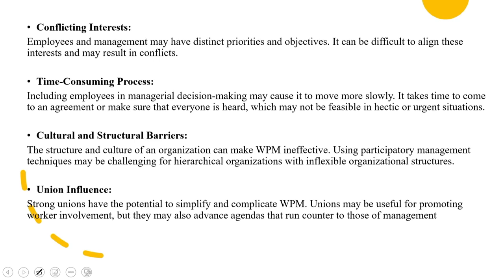When you look into cultural and structural barriers, the structure and culture of an organization can make worker participation ineffective. Using participatory management techniques may be challenging for hierarchical organizations with inflexible organizational structure. Strong unions have the potential to both simplify and complicate worker participation — if it serves their needs they'll try to simplify it; if not, they are going to complicate the WPM. Unions may be useful for promoting worker involvement, but they may also advance agendas that run counter to those of management.